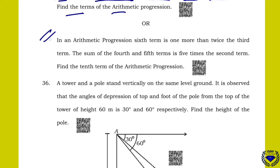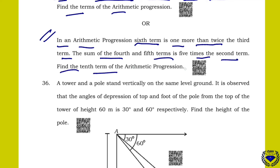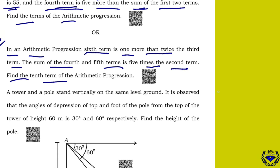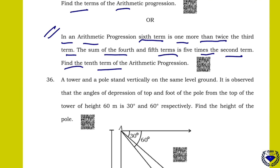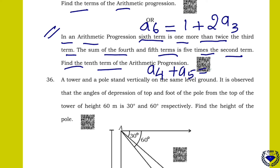In an AP, the 6th term is 1 more than twice the 3rd term. The sum of the 4th and 5th term is 5 times the 2nd term. Find the 10th term of the AP. These two equations you will get — just solve them and you will get the answer.